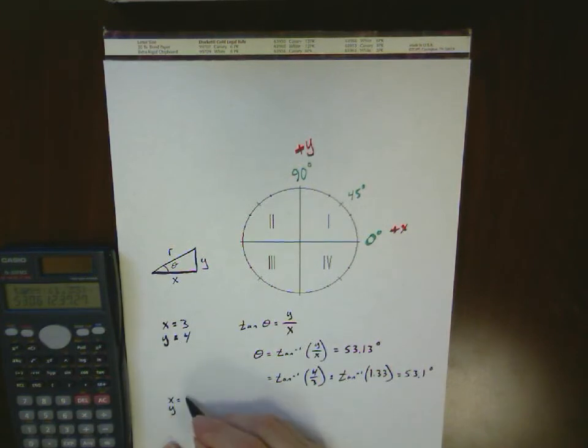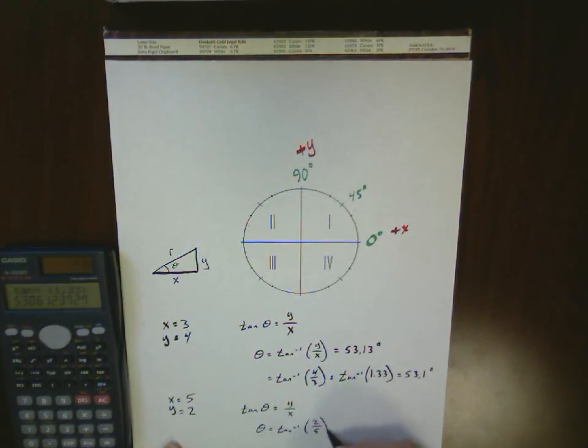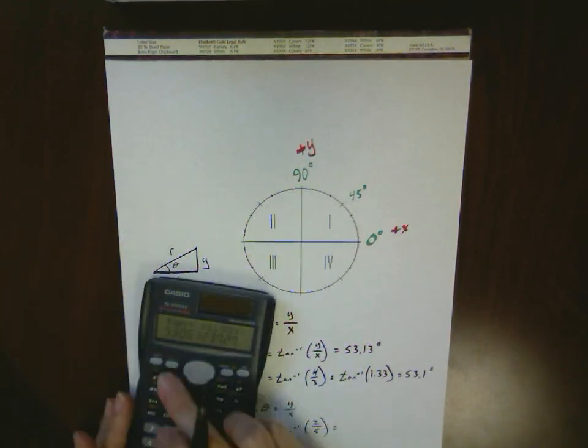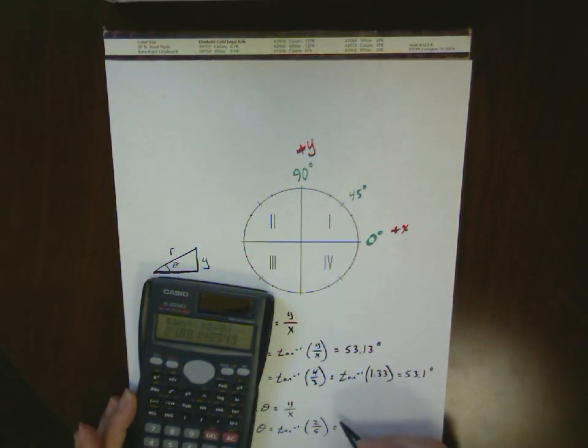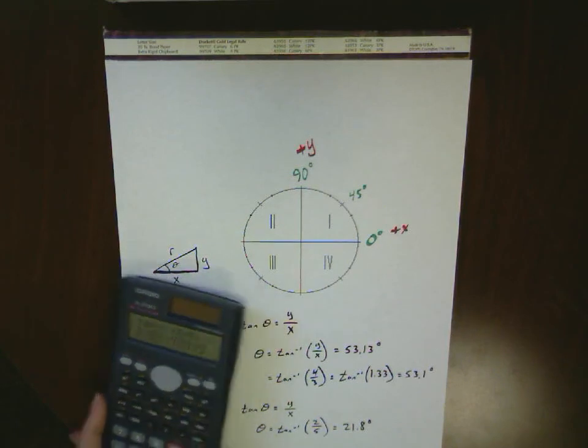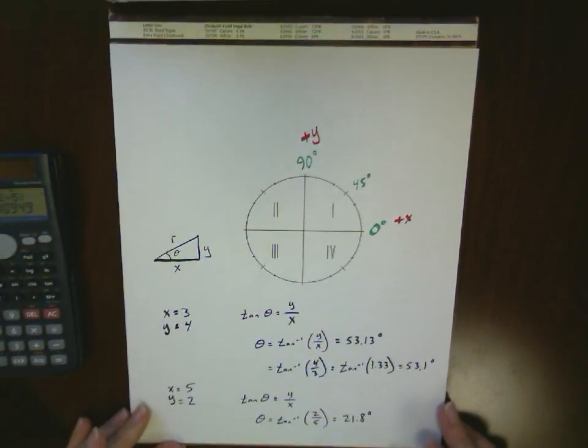Let's say I have an x value of 5 and a y value of 2. Inverse tangent, 2 over 5, and the inverse tangent of 2 divided by 5 is going to give me 21.8 degrees.